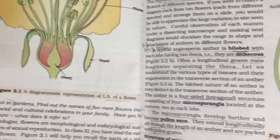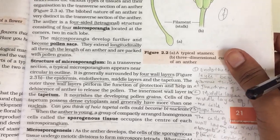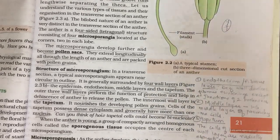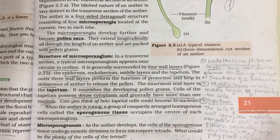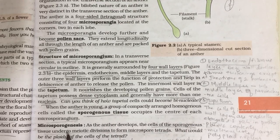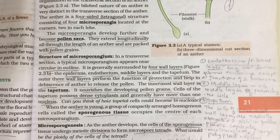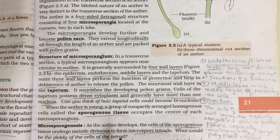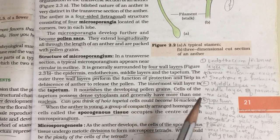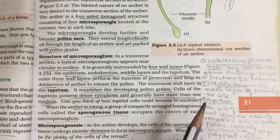In microsporogenesis, the cells of the sporogenous tissue undergo meiotic division to form microspore tetrads. We shall discuss microsporogenesis in detail in the next class. If you have any queries or ideas, please comment in the comment box. Stay safe and stay healthy.